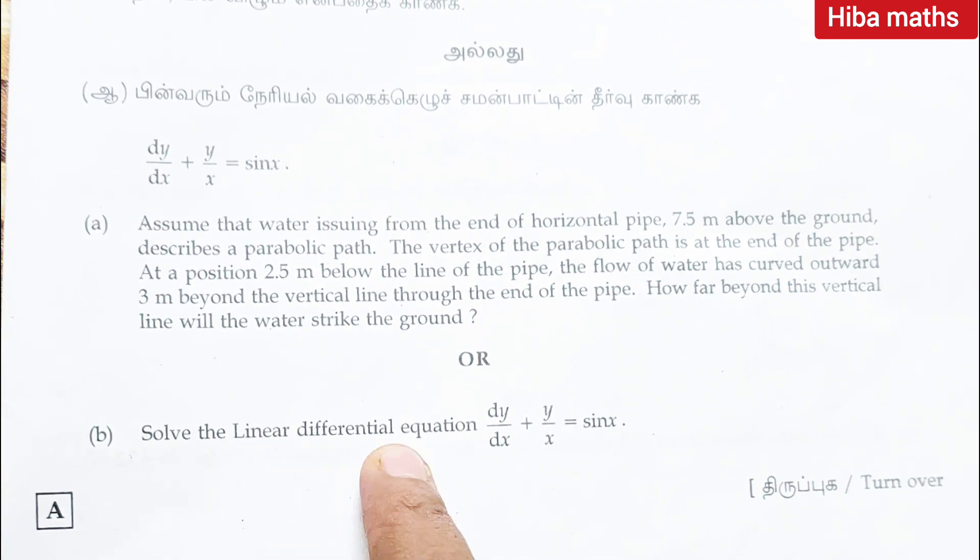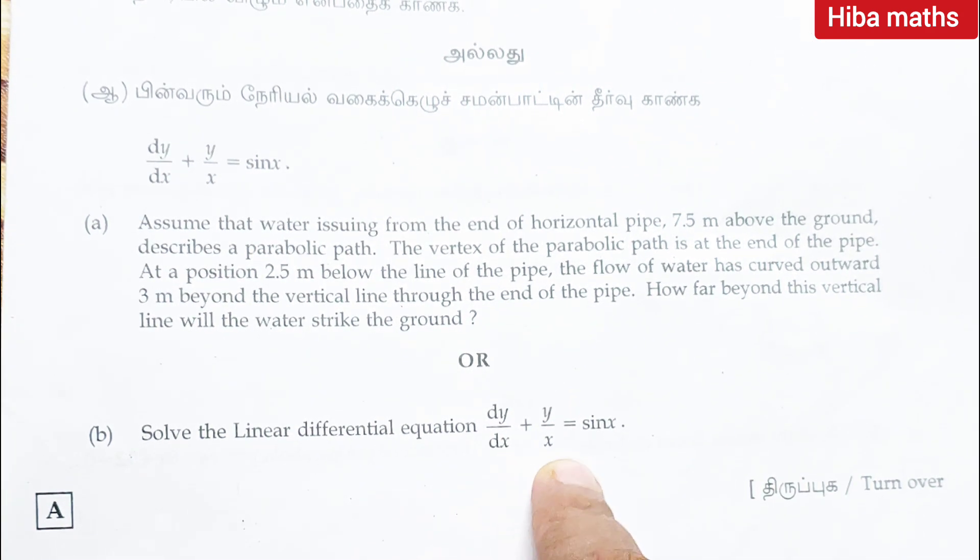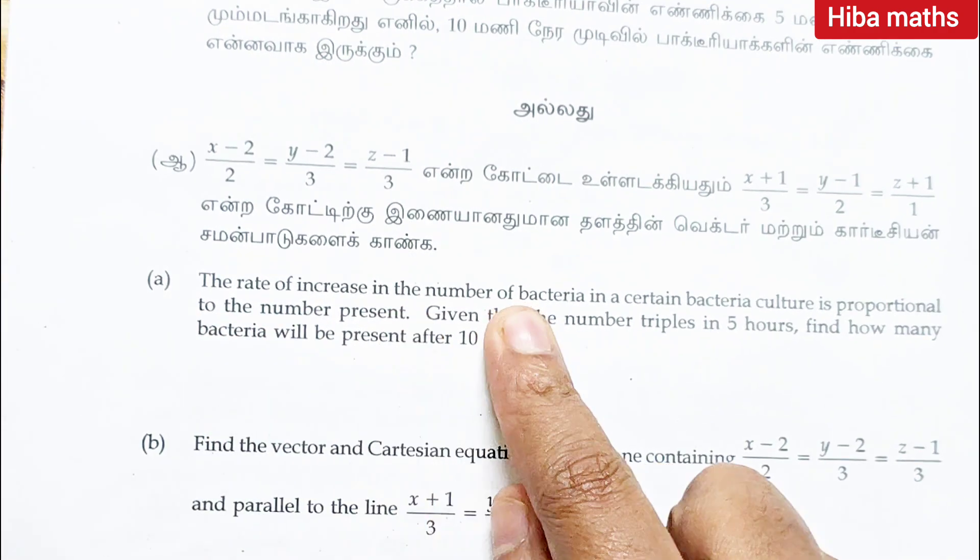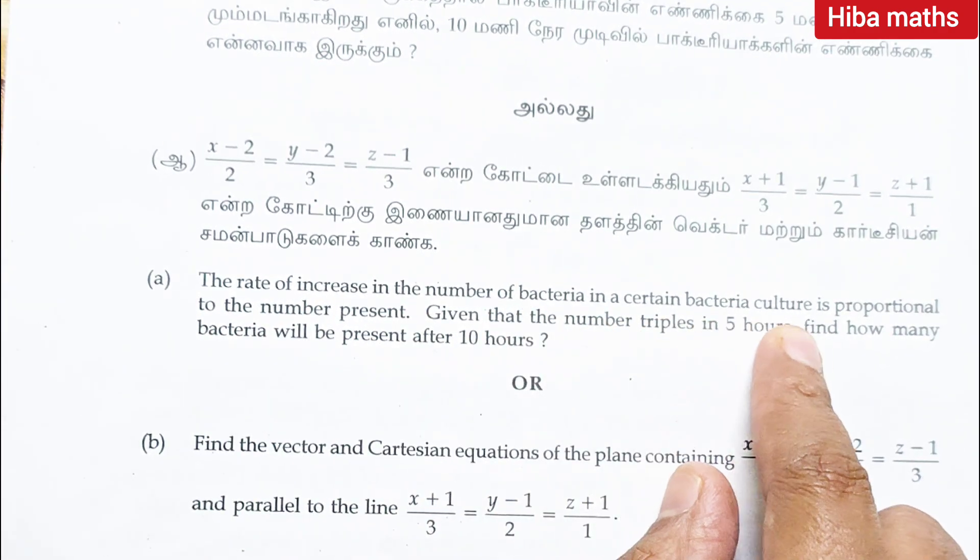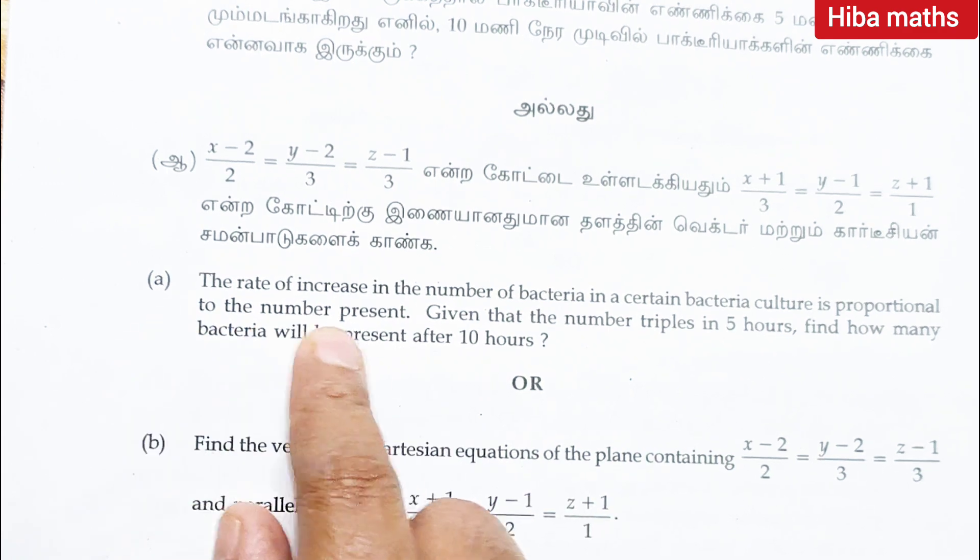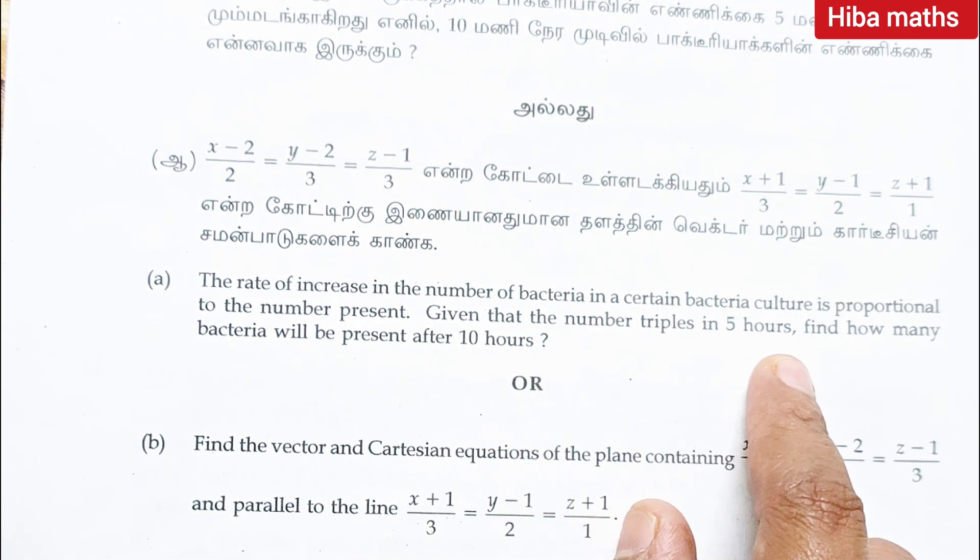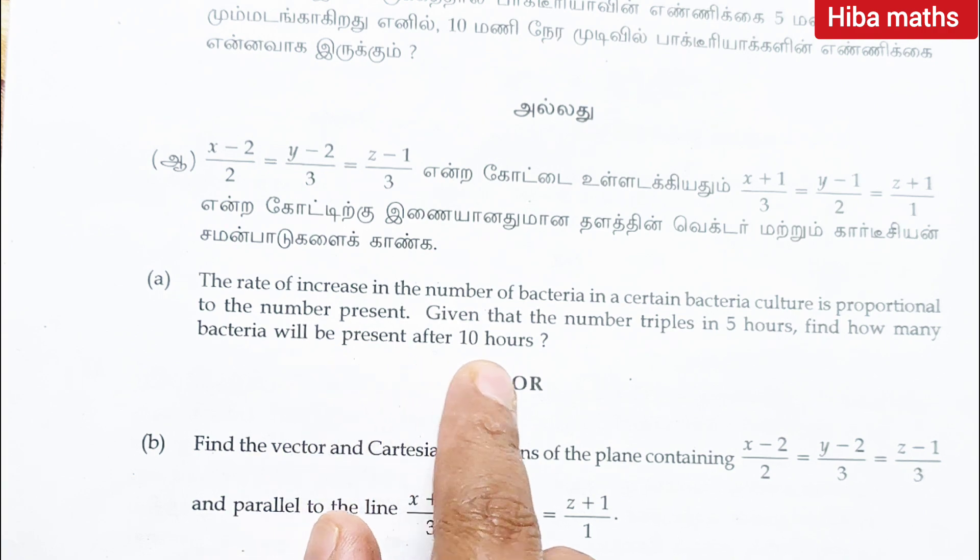Question 46: solve the linear differential equation dy by dx plus y by x is equal to sin x. Question 47: a rate of increase in the number of bacteria in a certain bacteria culture is proportional to the number present. Given that the number triples in 5 hours, find how many bacteria will be present after 10 hours.